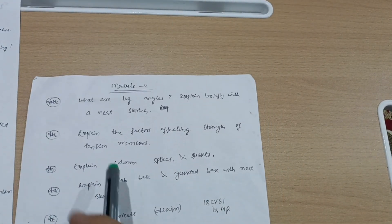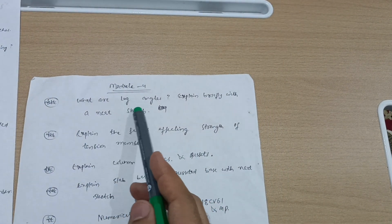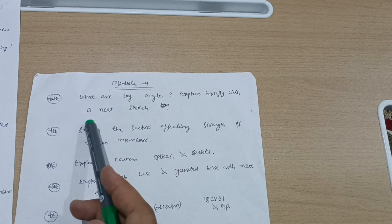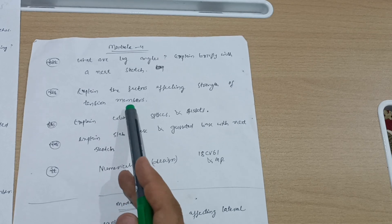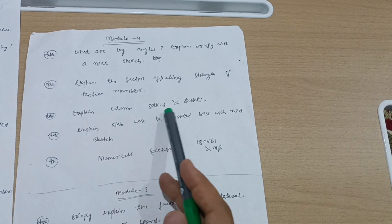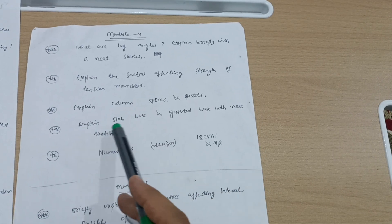Next is Module 4. You have to cover theoretical portions like: What are lug angles and explain deeply with a neat sketch? Explain the factors affecting strength of tension members - super important question. Explain column splices and gussets and explain slab base and gusseted base with neat sketch.